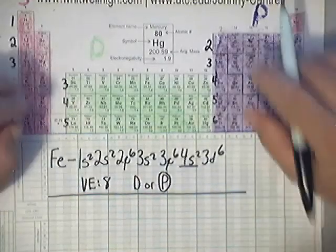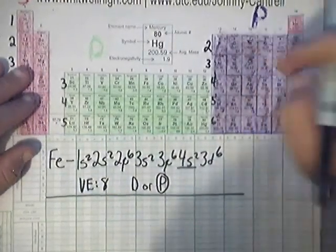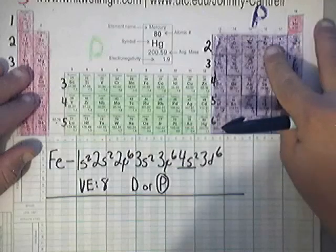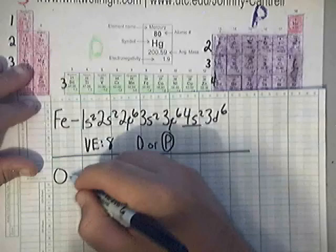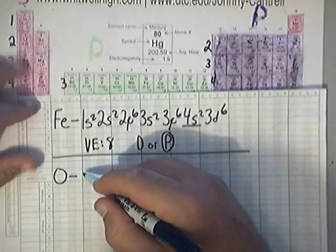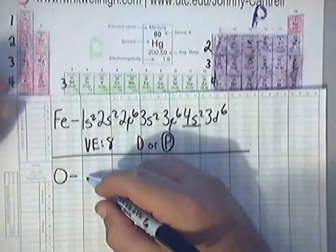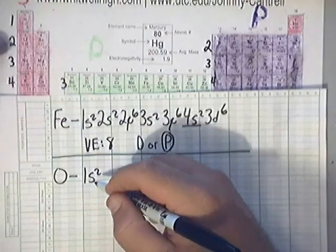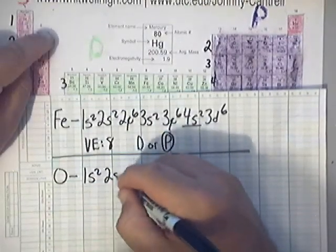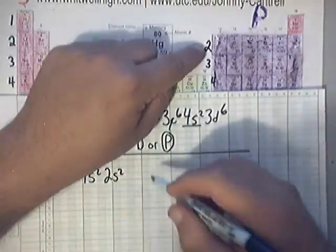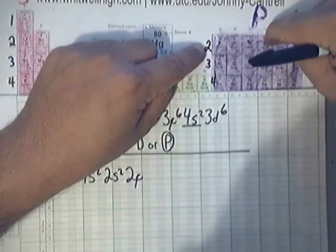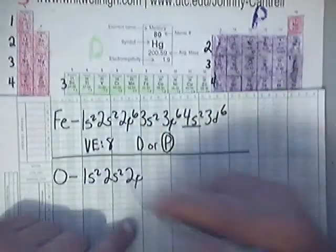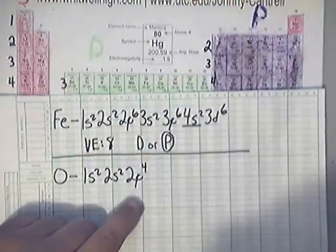Let's do oxygen. It's kind of easy, it's all the way up here, plus it gives me a little bit more room to work with. I don't have to write so much. Oxygen is: you pass up 1s2, you pass up 2s2, but you land on 2p what?